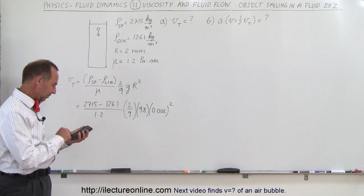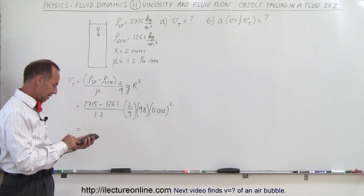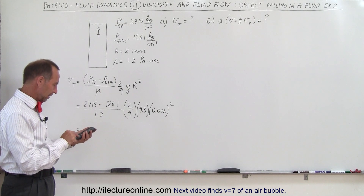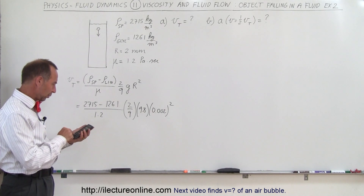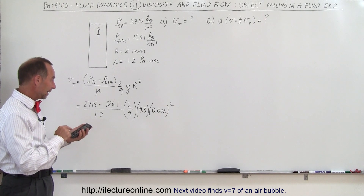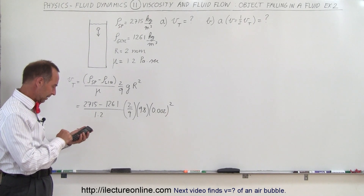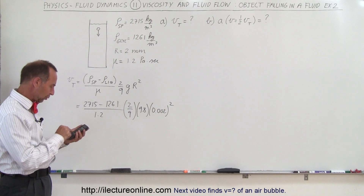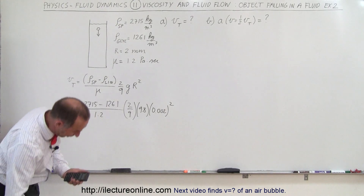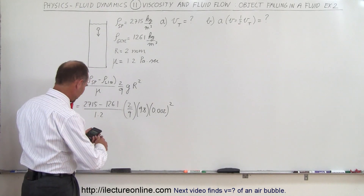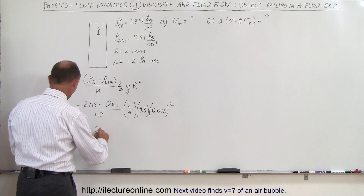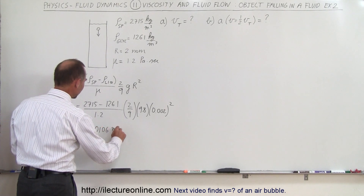So we take 2715 minus 1261, divided by 1.2, times 2 divided by 9, times 9.8, times 0.002 squared. That gives us a terminal velocity of 0.0106 meters per second — not a very large velocity.